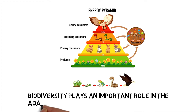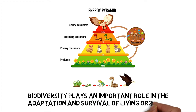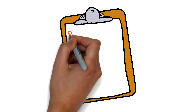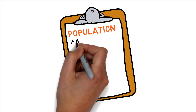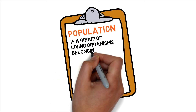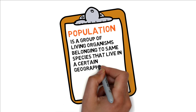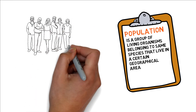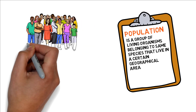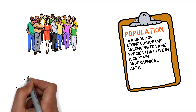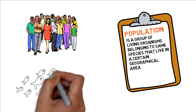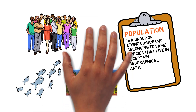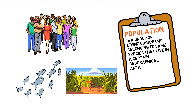Biodiversity plays an important role in the adaptation and survival of living organisms. Now let's discuss some important terms about biodiversity. First is population. Population is a group of living organisms belonging to the same species that live in a certain geographical area. That group of living organisms can be a group of humans, a group of animals like this school of fish, or a group of plants like this cornfield.